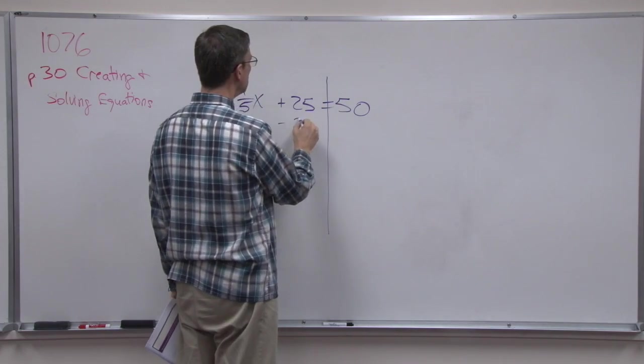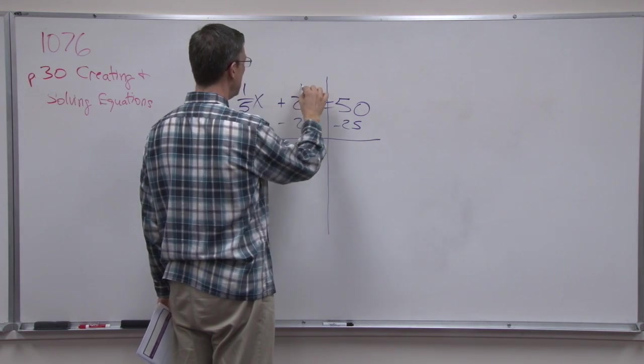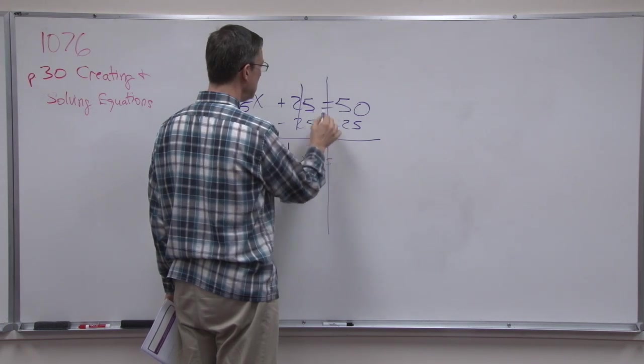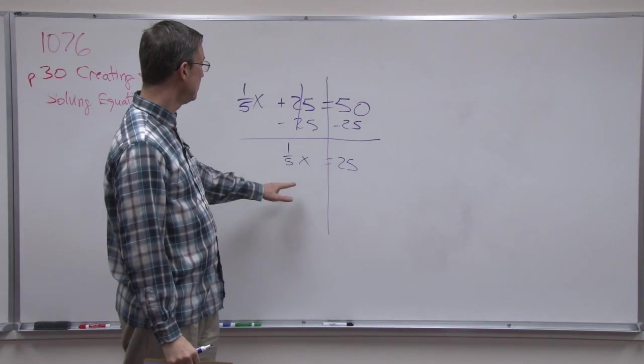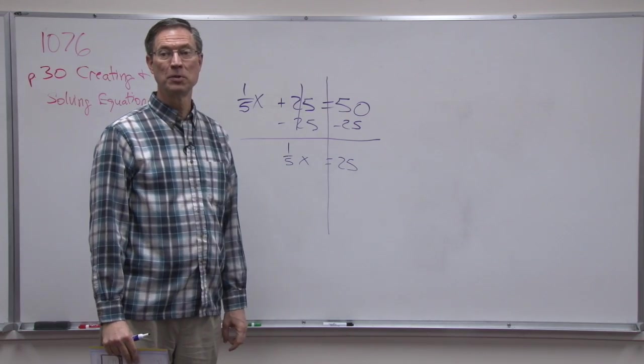So now let's solve it. So I'm going to draw a line through here. Subtract 25 from both sides. That cancels. I get one-fifth X. Keep the equals on the line. Equals 25. Now, again, the temptation is to think, 25 divided by 5 is 5. The answer must be 5. Nope.